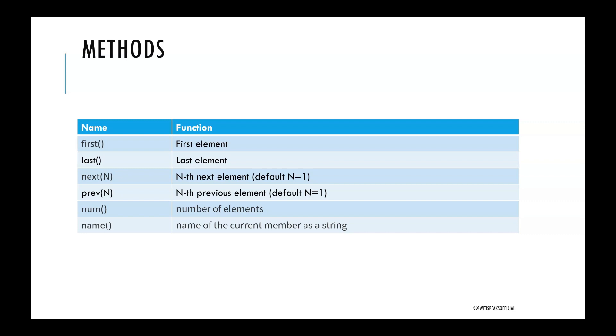Num displays the number of elements. Name will give the name of the current member as a string. So, whatever is the name associated with that particular value, that will be displayed when you use the function name.